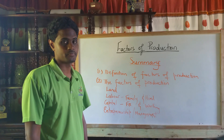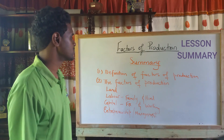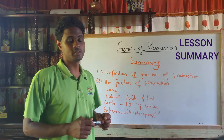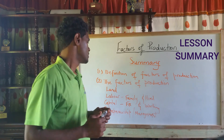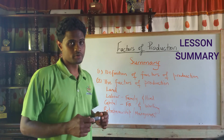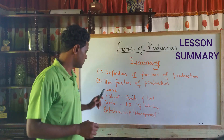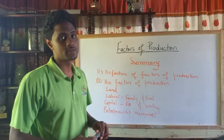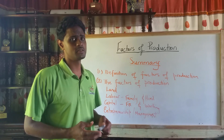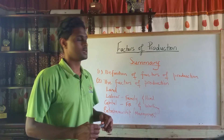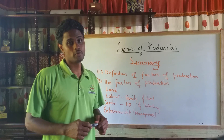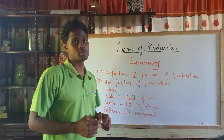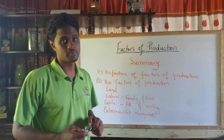Now for the summary of the lesson. Factors of production are the inputs that are needed to produce goods and services. There are four factors of production: land, labor, capital, and entrepreneurship. Land is the uppermost layer of the earth's surface that is not covered by water, and it includes the soil. Land is very necessary for the construction of buildings, construction of roads, setting up of service pools, etc.